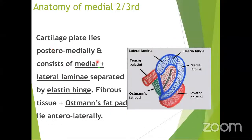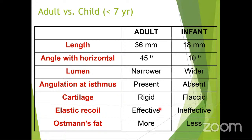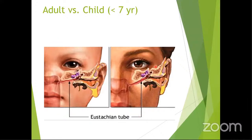The Eustachian tube has a lateral lamina, medial lamina, elastic hinge, levator palatini and tensor veli palatini muscles, and Ostmann's pad of fat — all of which help in the opening and closure of the Eustachian tube. In infants, the cartilage is more flaccid and the tube is more horizontal; in adults, the cartilage is more rigid with better elastic recoil and Ostmann's pad of fat, ensuring proper closure.